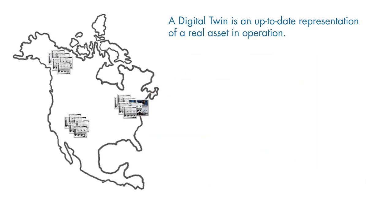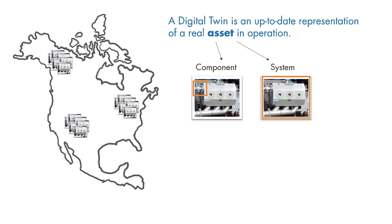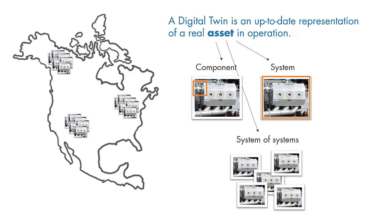What we refer to as an asset in the definition of the digital twin may be a component of a system, such as the valve of the pump, or it can be a system, the pump itself, or it can be a system of systems, which will be the well site with multiple pumps.